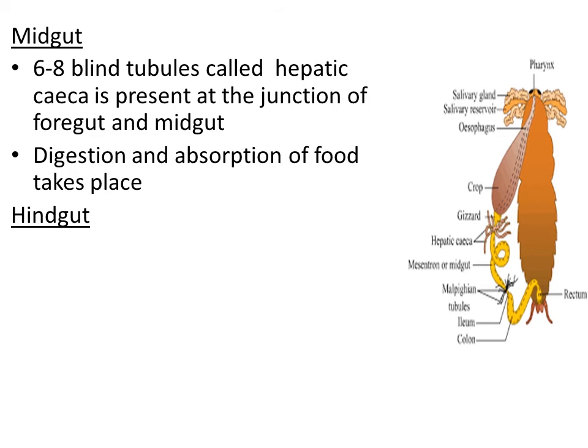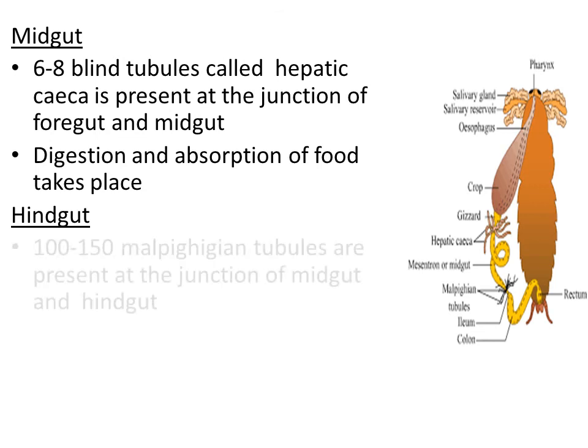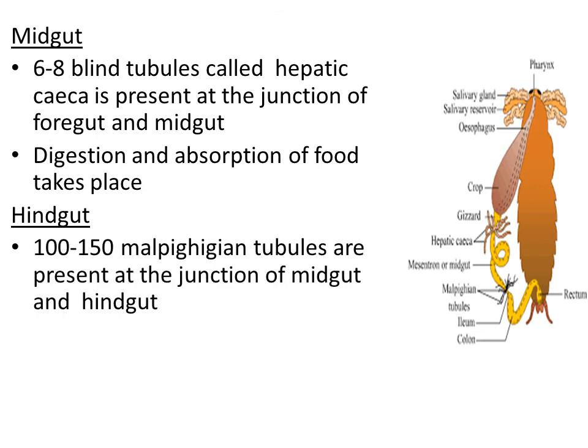The hindgut starts from ileum. At the junction where the midgut joins with the hindgut, we can see small thread-like structures called Malpighian tubules. Malpighian tubules are yellow-colored thread-like structures, with their number ranging from 100 to 150. So 100 to 150 Malpighian tubules are present at the junction of midgut and hindgut.